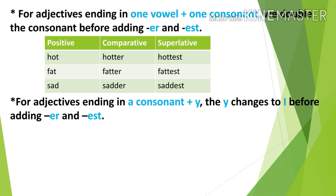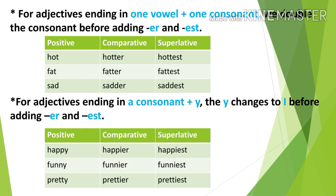Rule 3: for adjectives ending in one consonant plus -y, change the -y to -i before adding -er and -est. For example, 'happy' — 'p' is the consonant followed by 'y'; change 'y' to 'i' to get 'happier' and 'happiest.' Similarly: funny → funnier → funniest; pretty → prettier → prettiest.